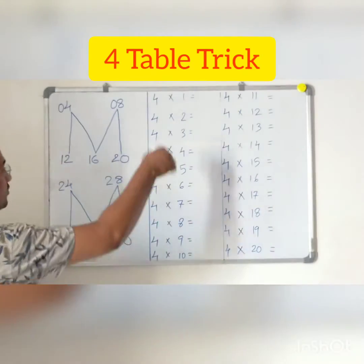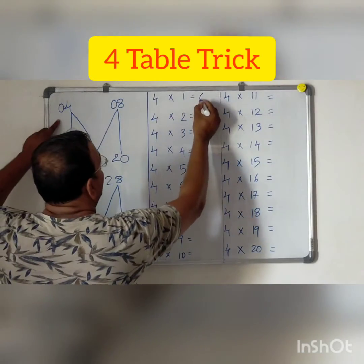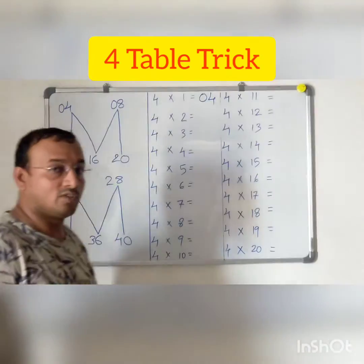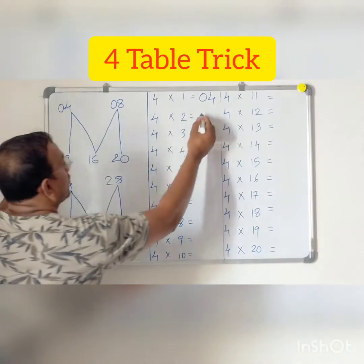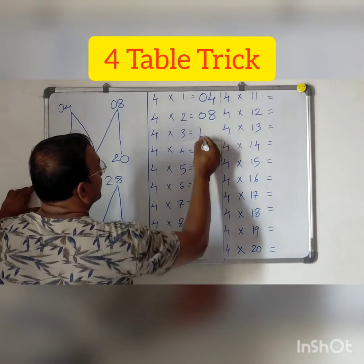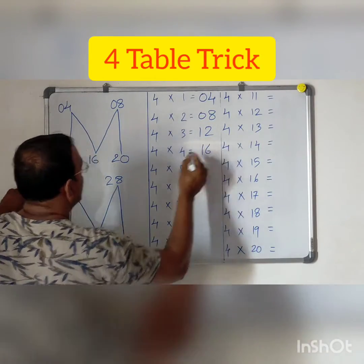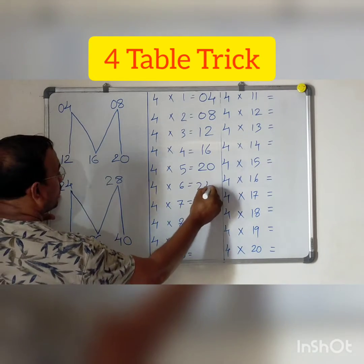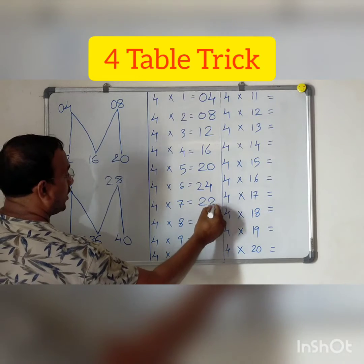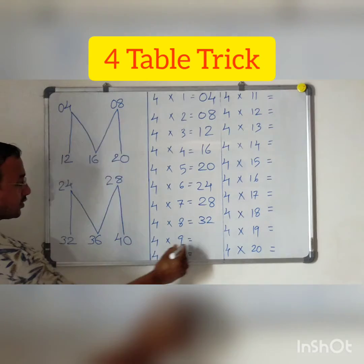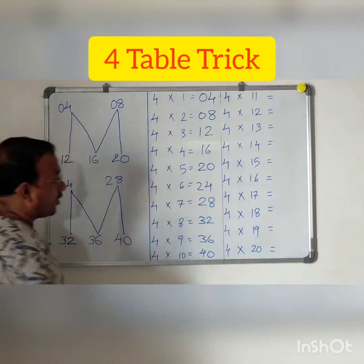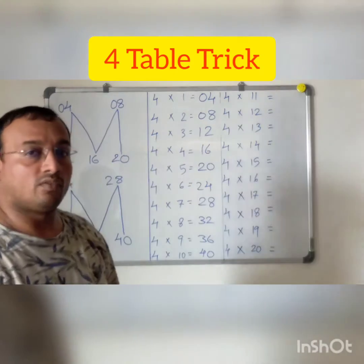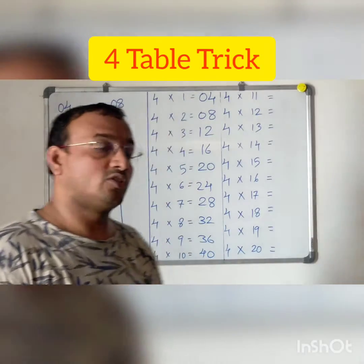So let us write this out as the 4 times table. 4 ones are 4. 4 twos are 8. 4 threes are 12. 4 fours are 16. 4 fives are 20. 4 sixes are 24. 4 sevens are 28. 32. 36. And 40. In this way, we have completed the 4 times table for the first 10 steps using this 2 yam strip.